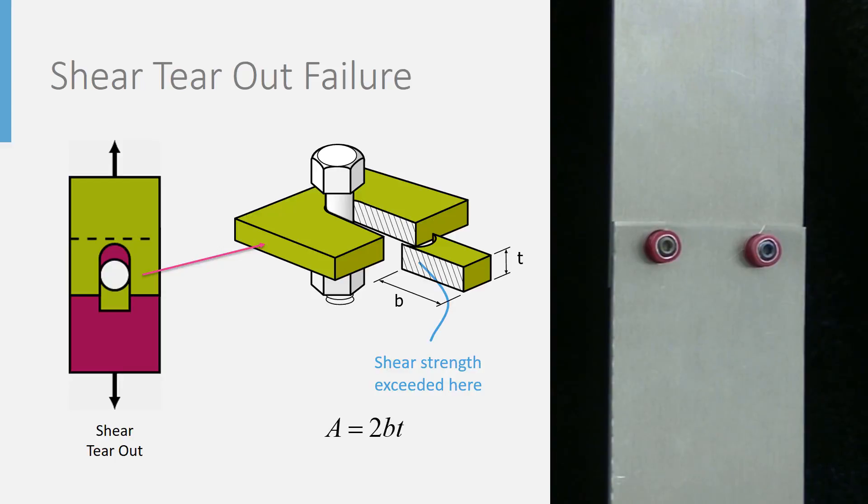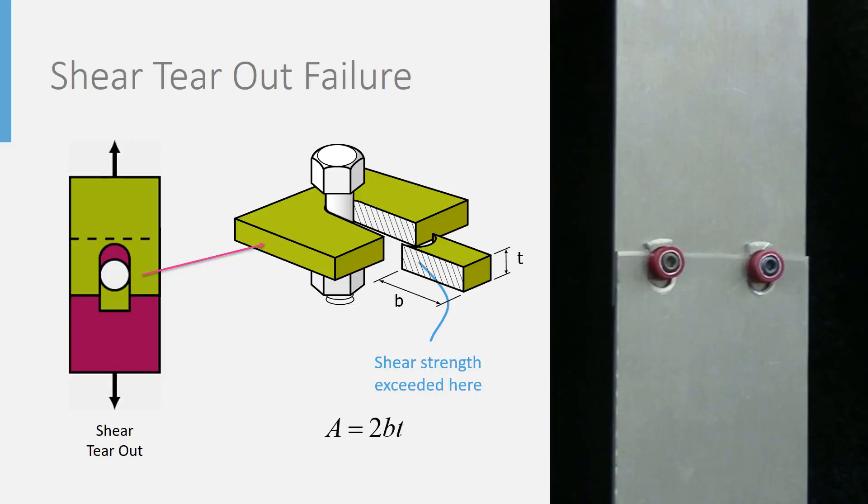This results in a failure mode known as shear tear-out, where these high shear stresses effectively cause the fastener to tear a portion of the sheet completely out of the joint.